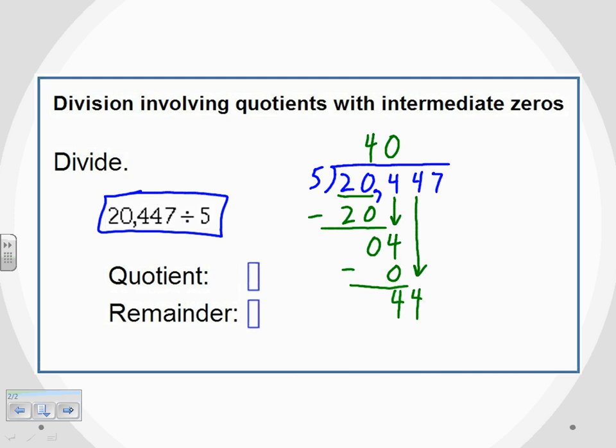And this time we ask ourselves: does 5 go into 44? Yes, now we do have something. 5 does go into 44—it goes into that eight times because 8 times 5 gives us 40.